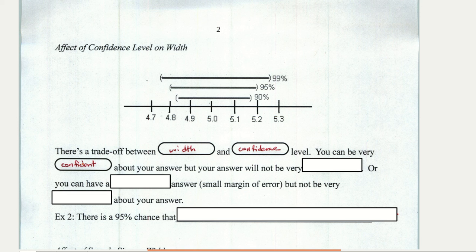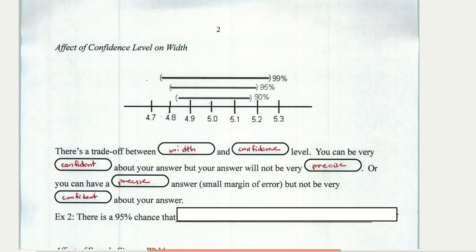So you can be very confident about your answer, but not be very precise. So in other words, if I want to be precise, I can have a smaller margin of error. If I want a precise answer, I'm not going to be very confident about my answer. That 90% confidence interval is smaller than the 99% confidence interval.